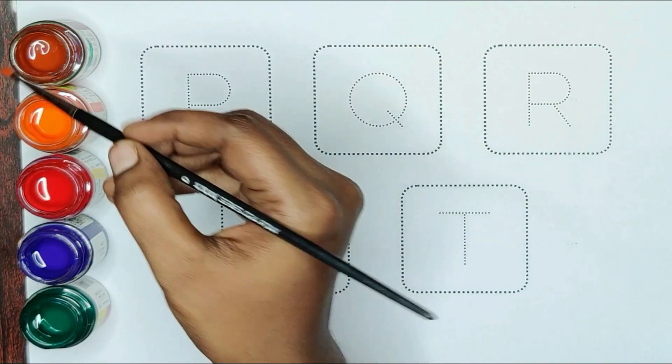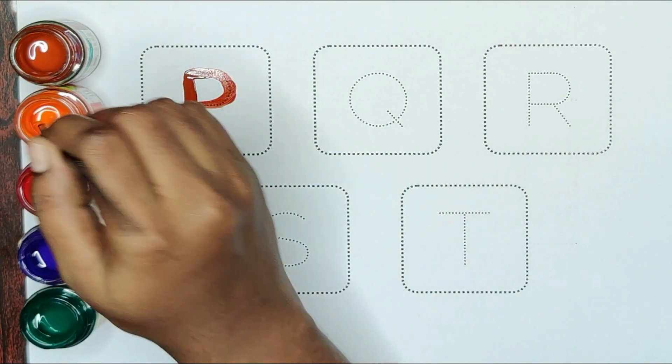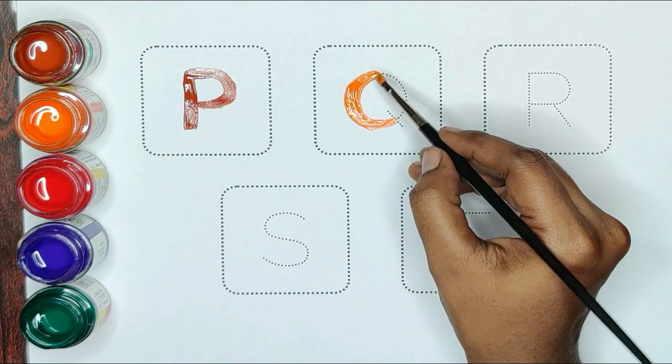Brown color, P. P for peacock. Orange color, Q. Q for question.